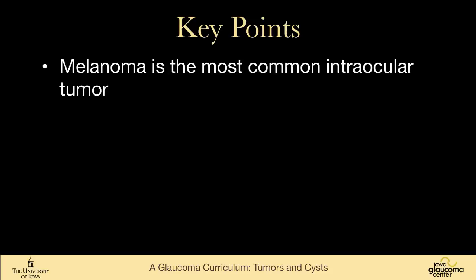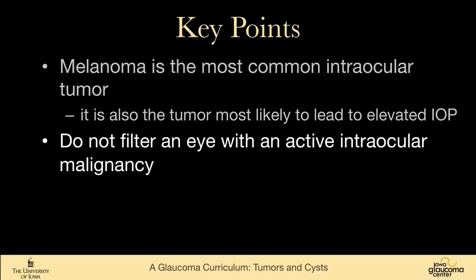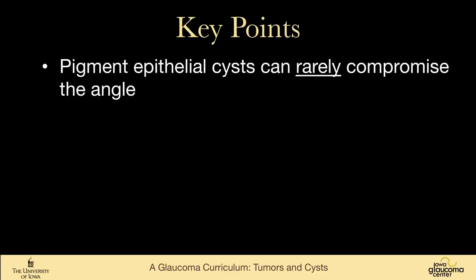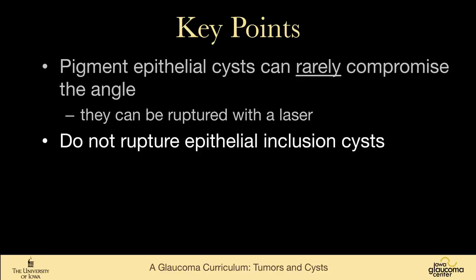In summary: melanoma is the most common intraocular tumor and the most likely to lead to elevated intraocular pressure. Do not perform filtration surgery on an eye with an active intraocular malignancy — treat the underlying tumor. Cysts of the pigment epithelium are very common and very rarely compromise the iridocorneal angle; they can be ruptured with a laser. However, do not rupture epithelial inclusion cysts — these need to be surgically drained, treated with absolute alcohol, or managed by another means to prevent release of epithelium into the eye.